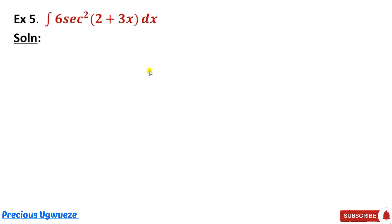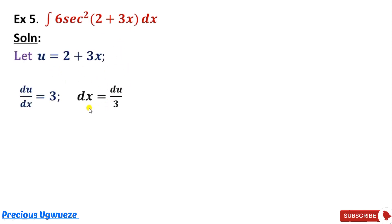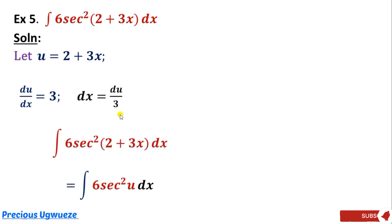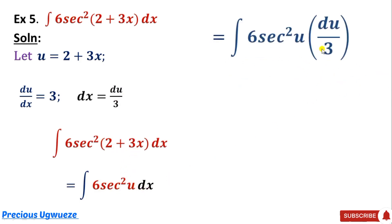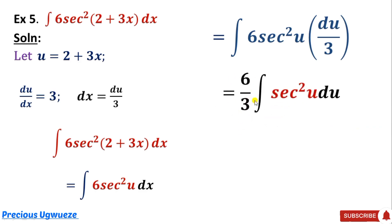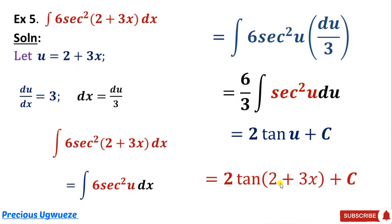Next example: integrate sec²(2 plus 3x) with respect to x. We give a name to the inner function, differentiate to get 3, make x the subject, then substitute: the expression becomes sec² u, dx becomes du over 3. Bringing out the constants, 6 over 3 simplifies to 2. The integral of sec² u is tan u, so the result is 2 tan(2 plus 3x) plus c.